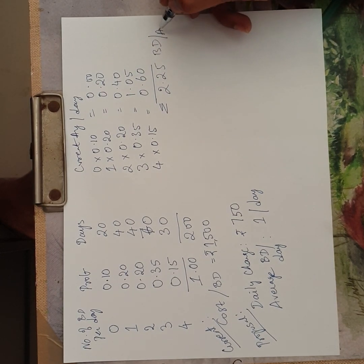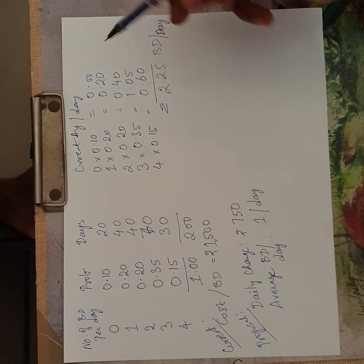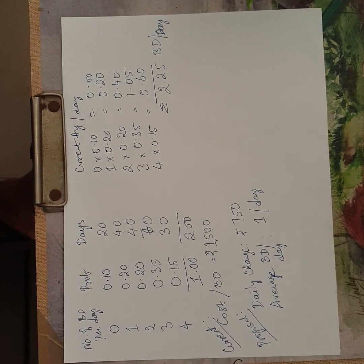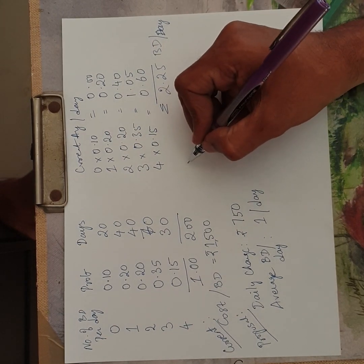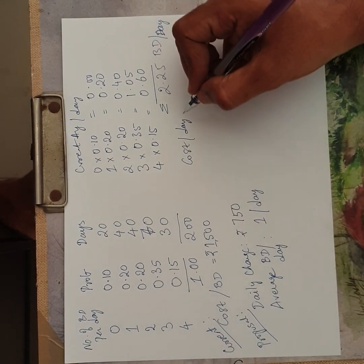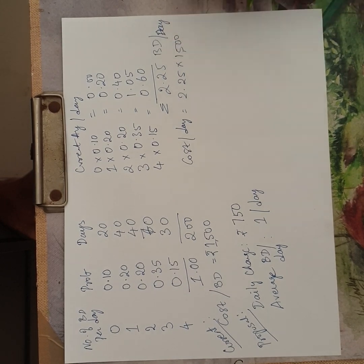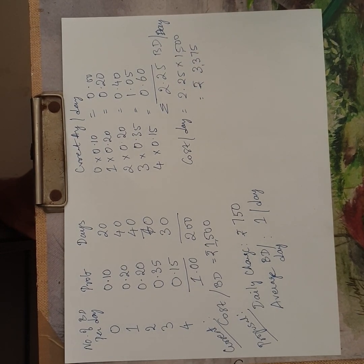After multiplying each outcome by its probability and adding them up, the current average is 2.25 breakdowns per day. Today, the corporation is having on average 2.25 breakdowns per day. At 1500 rupees per breakdown, the current cost per day is 3375 rupees.